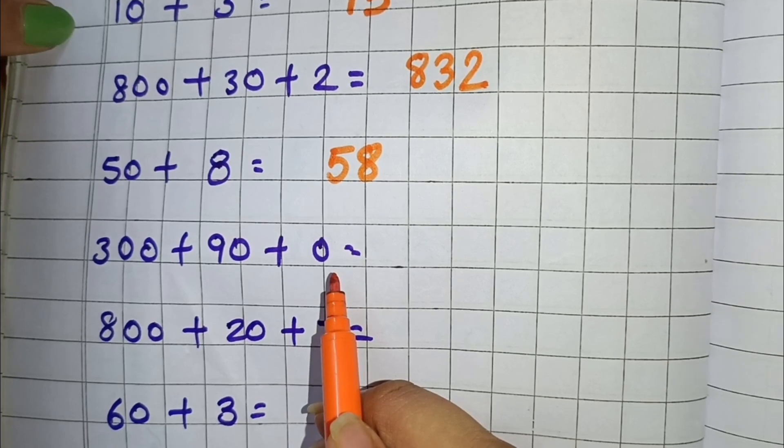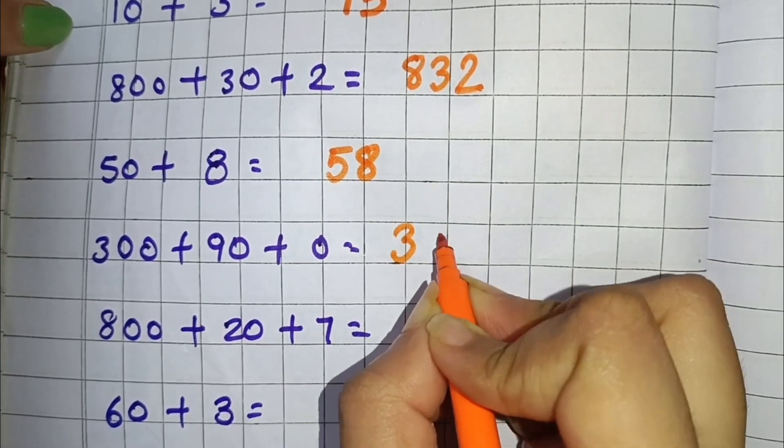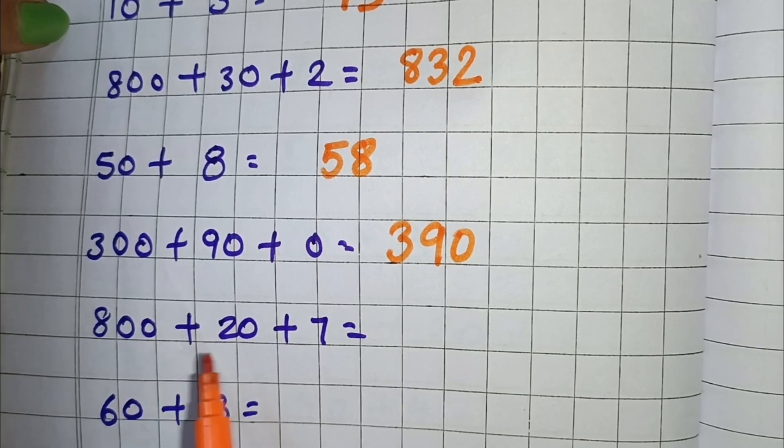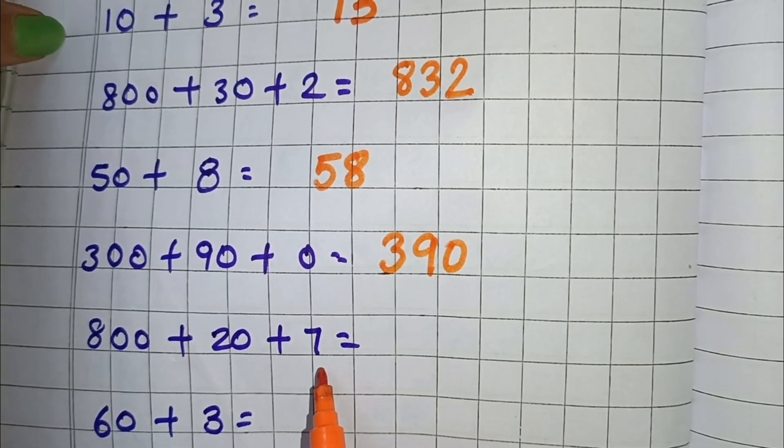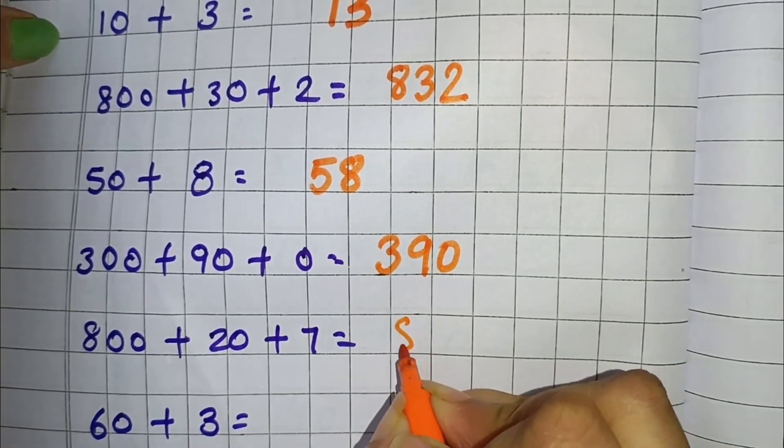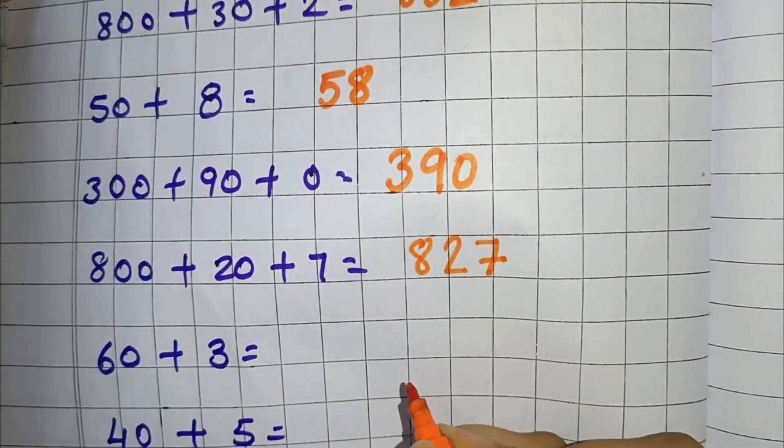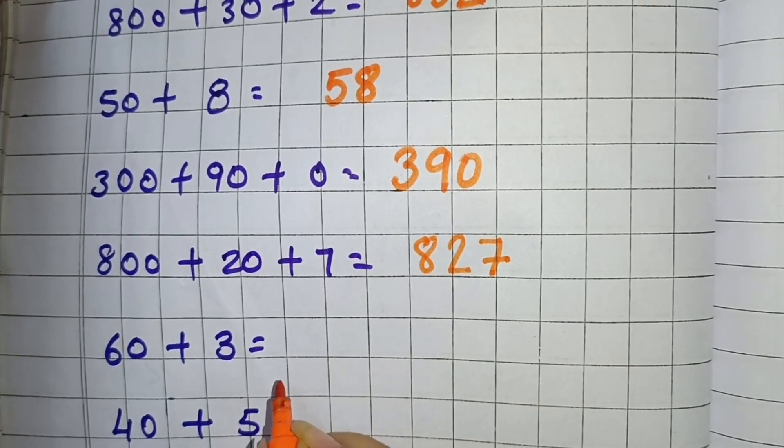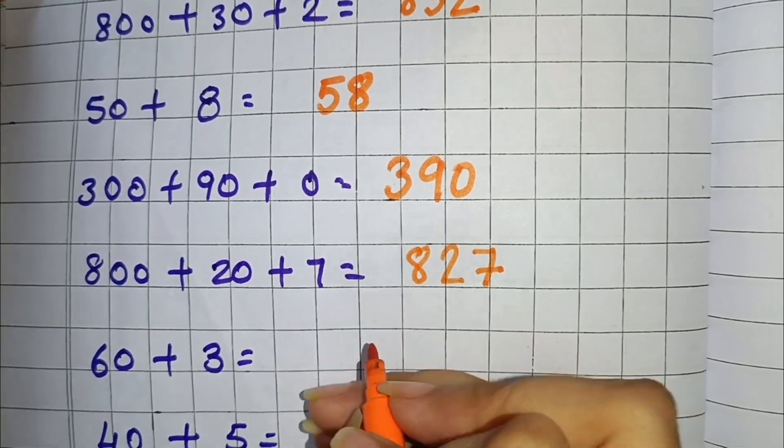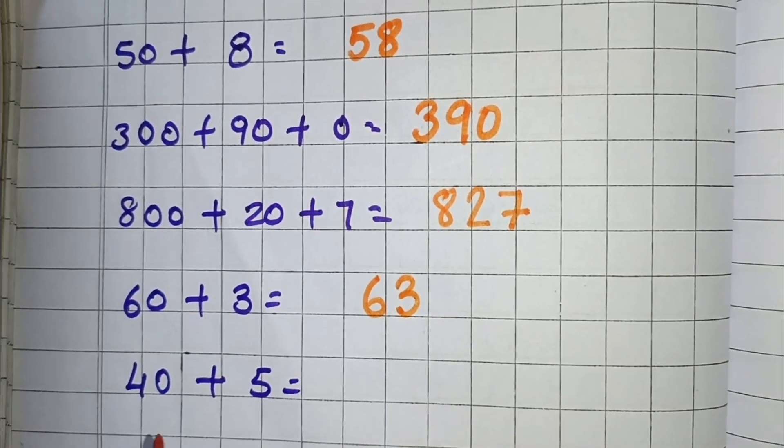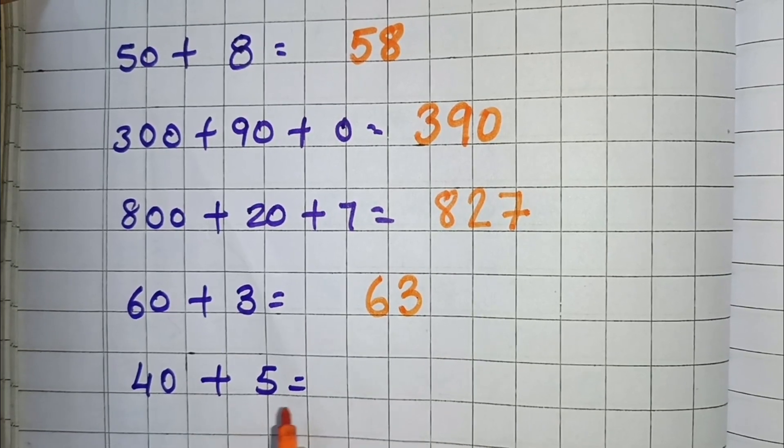Its short form will be 390. Then 800 plus 20 plus 7, so its short form will be 827. Next we have 60 plus 3, so you can write this as 63.